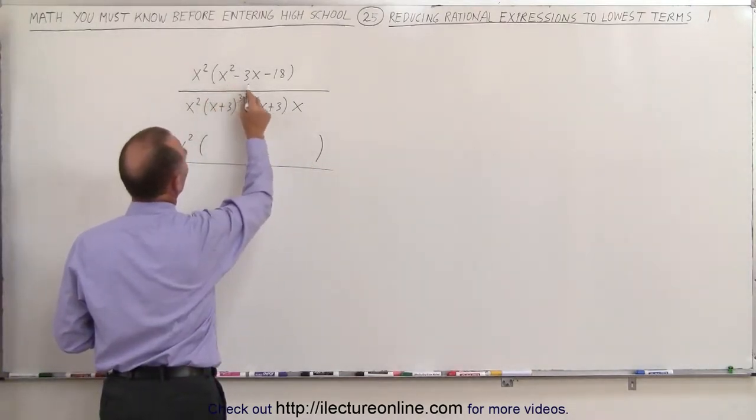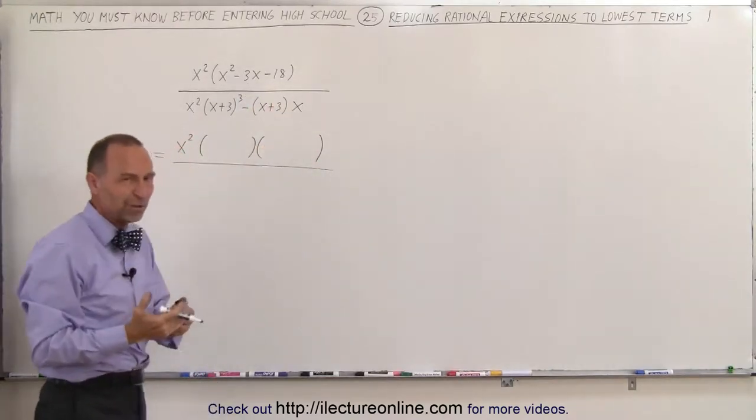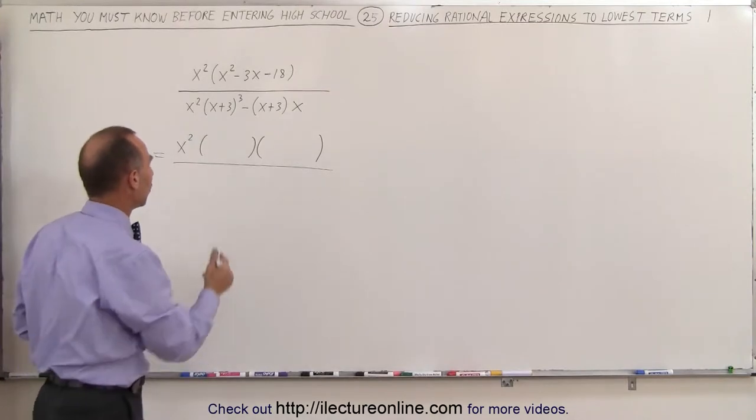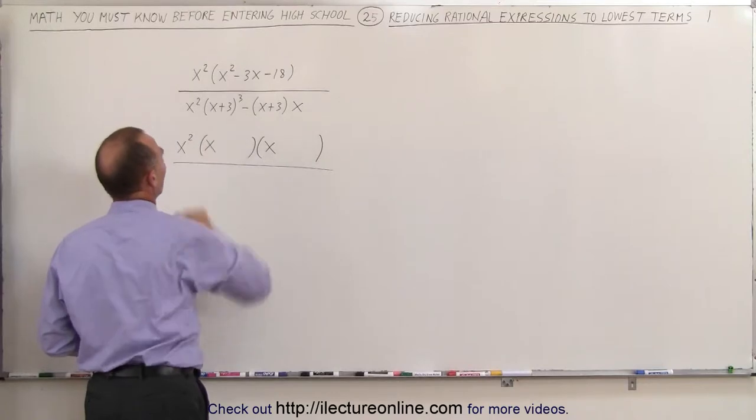So instead of writing x squared minus 3x minus 18, we're going to write it as a product of two binomials, which means we're going to write it in its factored form. We start out by writing an x there and an x there because x times x gives us x squared.